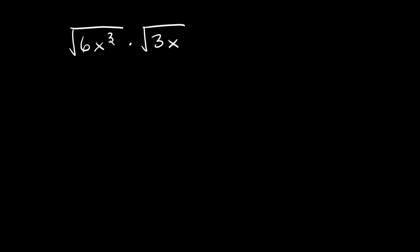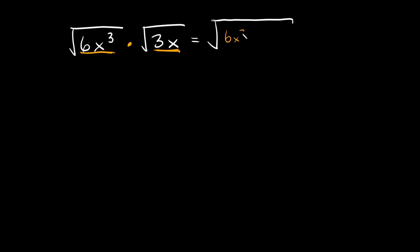Here we have the square root of 6x cubed times the square root of 3x. Again, I have some stuff under each radical, so the first step is to combine all of it under one big radical symbol — that's your first step. So we're going to have 6x cubed times 3x. Let's start simplifying. With the numbers: 6 times 3 is equal to 18.